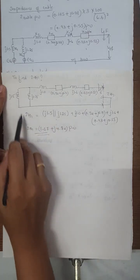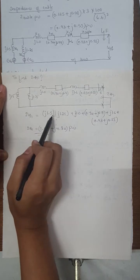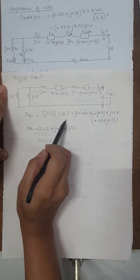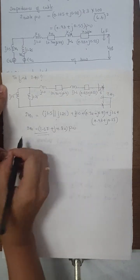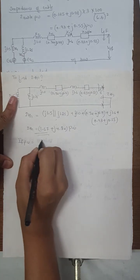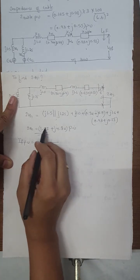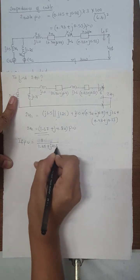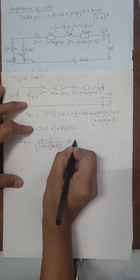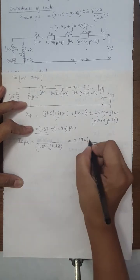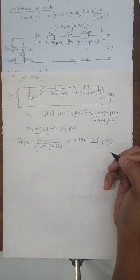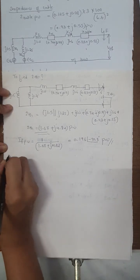After combining the two parallel generator reactances into one, and adding all series reactances, Zth = (1.67 + j4.82) per unit. The fault current in per unit is: If = Vth / Zth = 1 / (1.67 + j4.82), giving If = 0.196 at an angle of minus 70.8 degrees per unit.